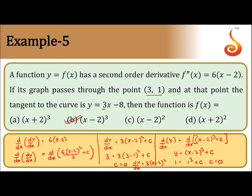The given curve is y = (x-2)³. The tangent equation has slope dy/dx = 3, since it is in the form y = mx + c. The tangent is at the point (3, 1).